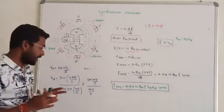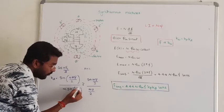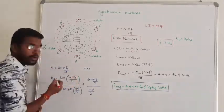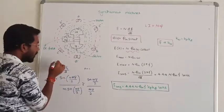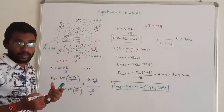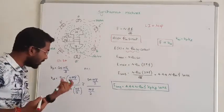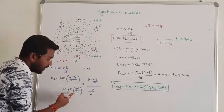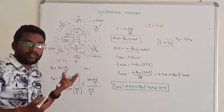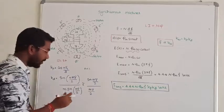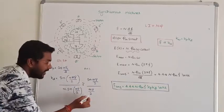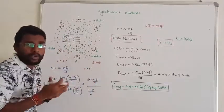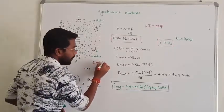Remember one more thing: sometimes they don't give you information about the slot angle per pole. When the theta value is very small, sin theta can be approximately equal to theta.